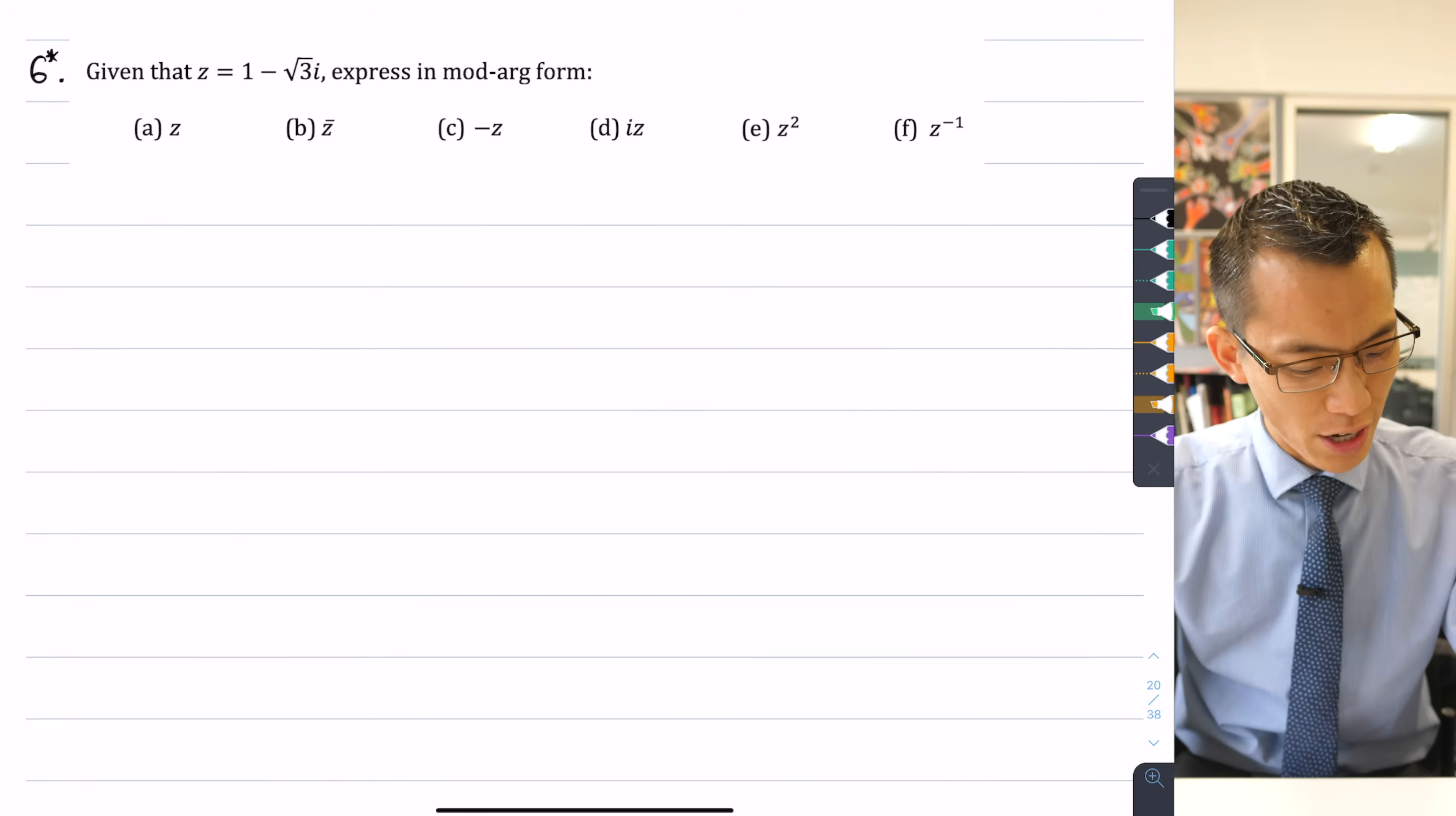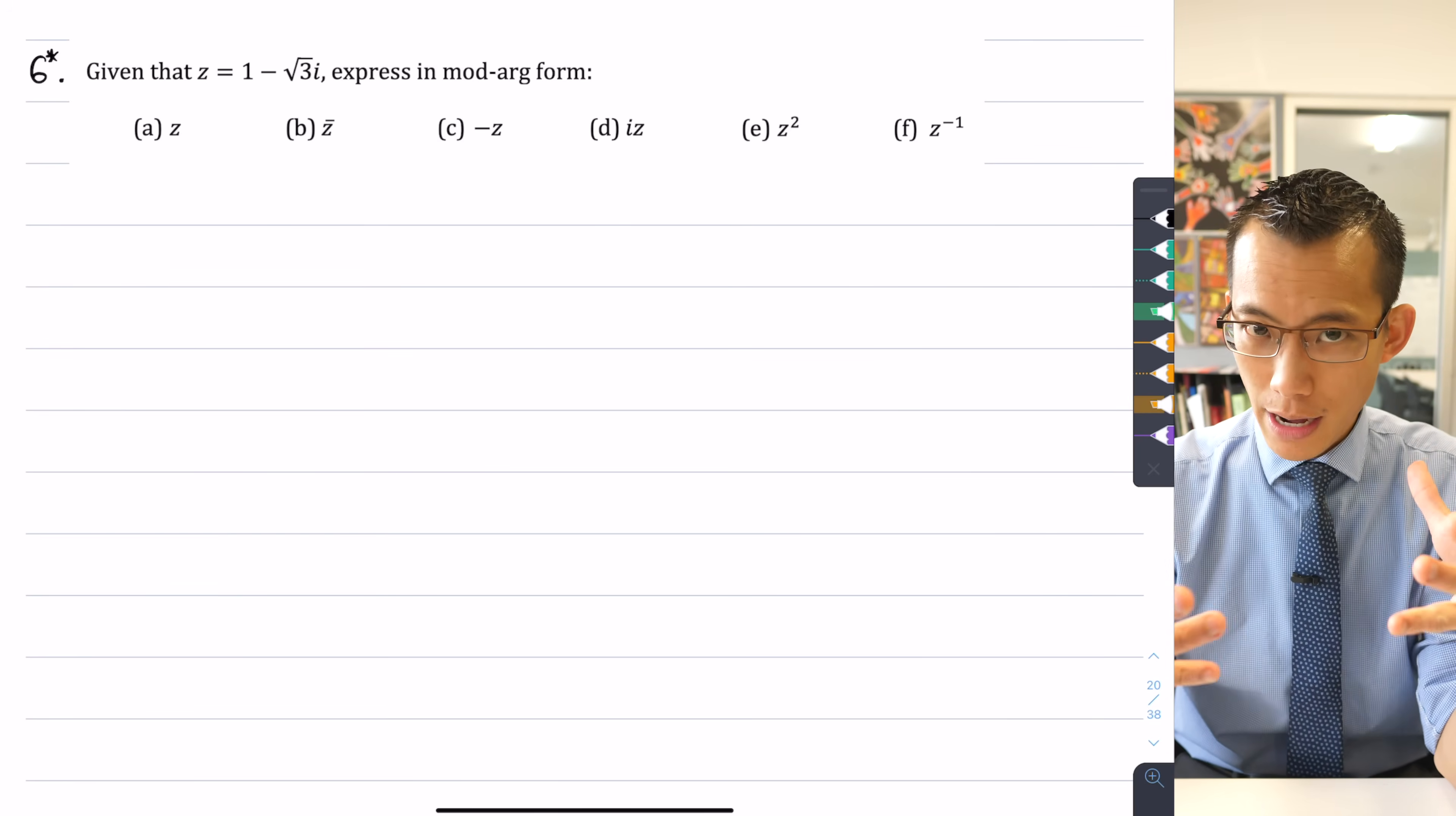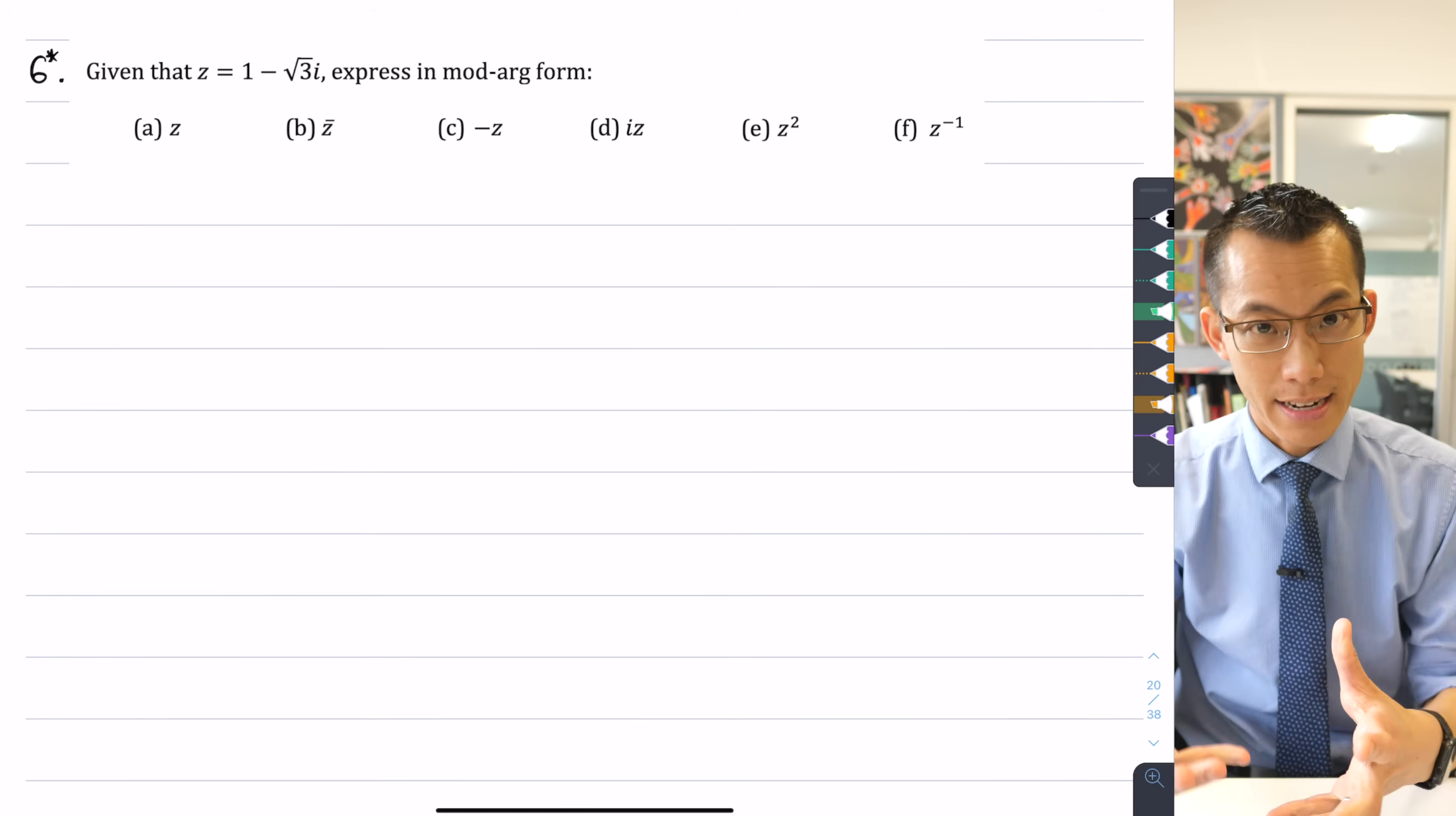Given that z equals 1 - √3i, express in mod arg form, in polar form. So the first thing I want to point out is polar form, mod arg form, it's in terms of the modulus and the argument, the distance from the origin, and the angular rotation from the positive side of the real axis up to wherever your complex number is.